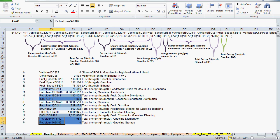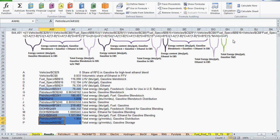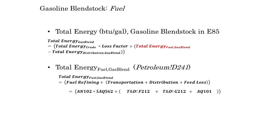Now I'll move on to the fuel refining references. There is a fuel refining reference for each of the three upstream fuel pathways, and I'll start with gasoline blendstock. The gasoline blendstock terms for the E85 result formula are shown here. We'll review the crude feedstock term later on. The loss factor is a constant, and we already covered the gasoline blendstock distribution term. The fuel term is made up of the inputs from fuel refining, transportation, distribution, and feed loss, and I'll go into GREET Excel and identify the cell references that contain these inputs.